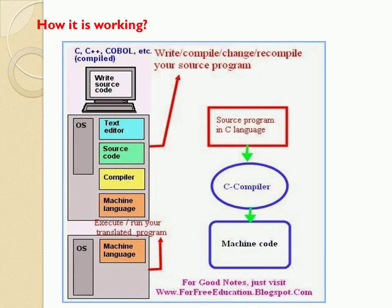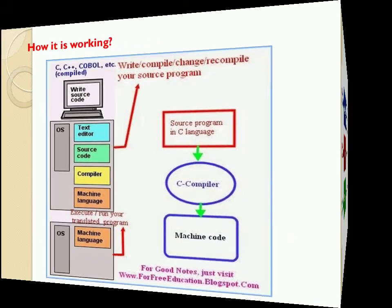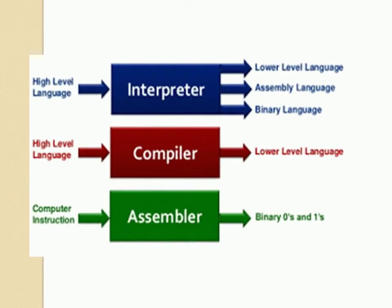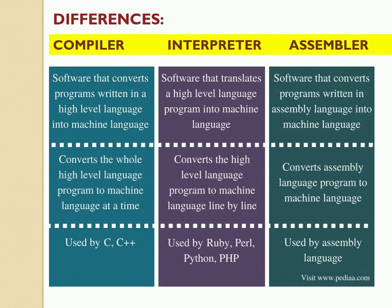This is the main process of the translator. Here is a quick view: the interpreter converts high level language into low level language, assembly language, and binary language. The compiler converts high level into low level language. The assembler converts mnemonics code into low level language. Here is a short comparison between compiler, interpreter, and assembler — just have a glance.